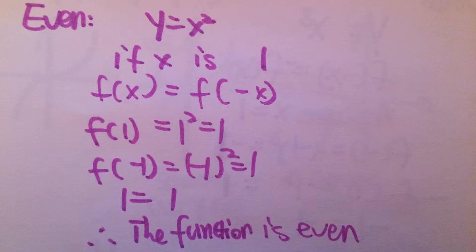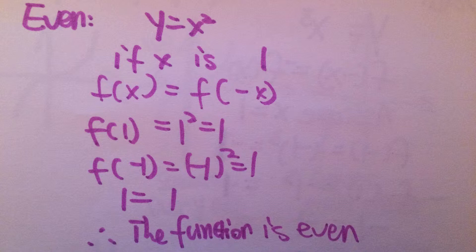Now we are going to take a look at the even function. The first way is to substitute a number. The function y equals to x squared is the first example. Assume that the number is 1. According to f of x equals to f of negative x, we substitute 1 into y equals to x squared and we obtain 1. We substitute negative 1 to x, then the answer is also 1. Since 1 equals to 1, therefore f of x equals to f of negative x, and the function is determined even.